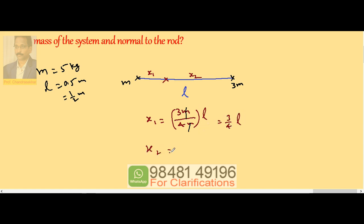Similarly, if I take X2, second mass by total mass into total distance. M and M gets cancelled. This is equal to L/4.